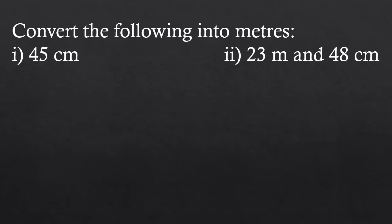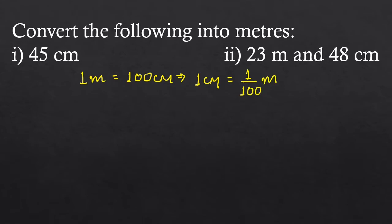The next question is to convert the following into meters. The relation between meter and centimeter is 1 meter equals 100 centimeters, which means 1 centimeter equals 1 upon 100 meters. Here, 45 centimeters is given, so 45 centimeters equals 45 upon 100 meters.